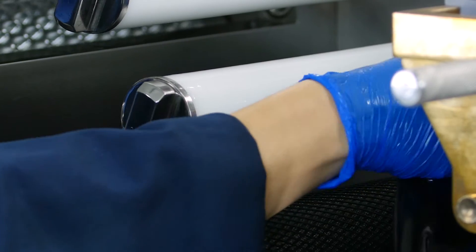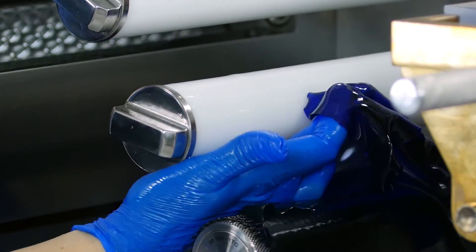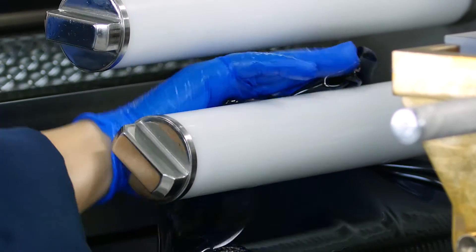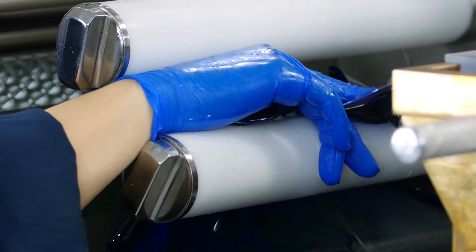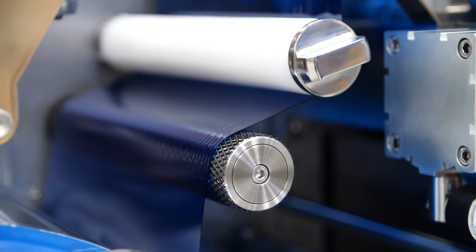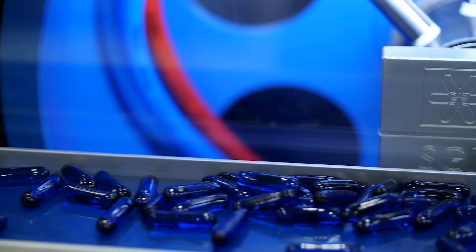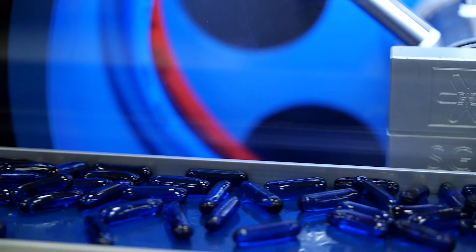The gelatin ribbons are peeled off the casting drum and fed through a pair of porous oil rolls, where lubricant is applied to both the upper and lower surfaces of the ribbons. This ensures that the gelatin will not stick to the machinery and that the final capsules will not stick together during the drying process.